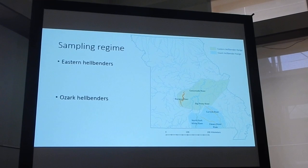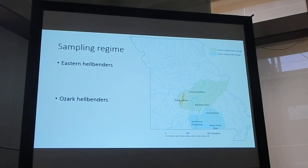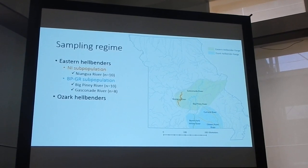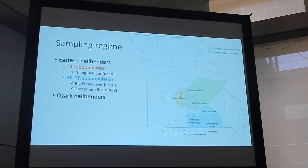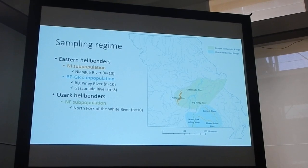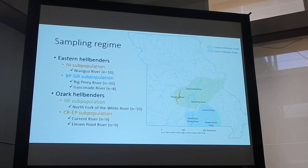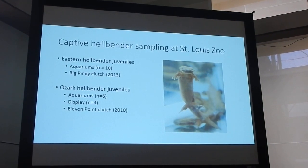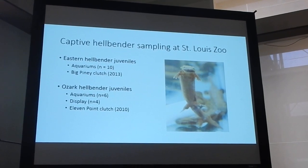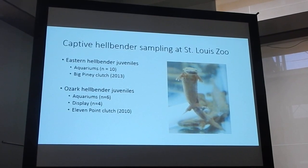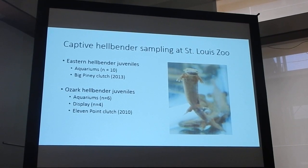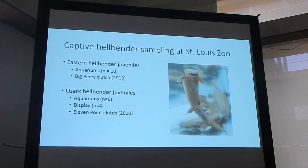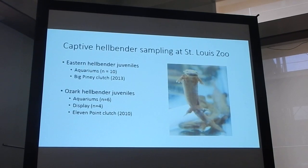Here's my sampling regime — pay attention to the colors I show you in this slide because I will be using them throughout my presentation. For the Eastern hellbenders, we collected individuals from the Niangua subpopulation in the Niangua River (the western part), and from the Big Piney and Gasconade Rivers for the eastern genetic subpopulation. For the Ozark subspecies, we collected individuals from the North Fork of the White River (western), and the Prairie River and Eleven Point River (eastern subpopulation). We also worked with the St. Louis Zoo to sample captive individuals — ten Eastern hellbender juveniles and ten Ozark juveniles. The zoo was interested in knowing if there were differences between individuals held in back aquaria versus those on display for the public.